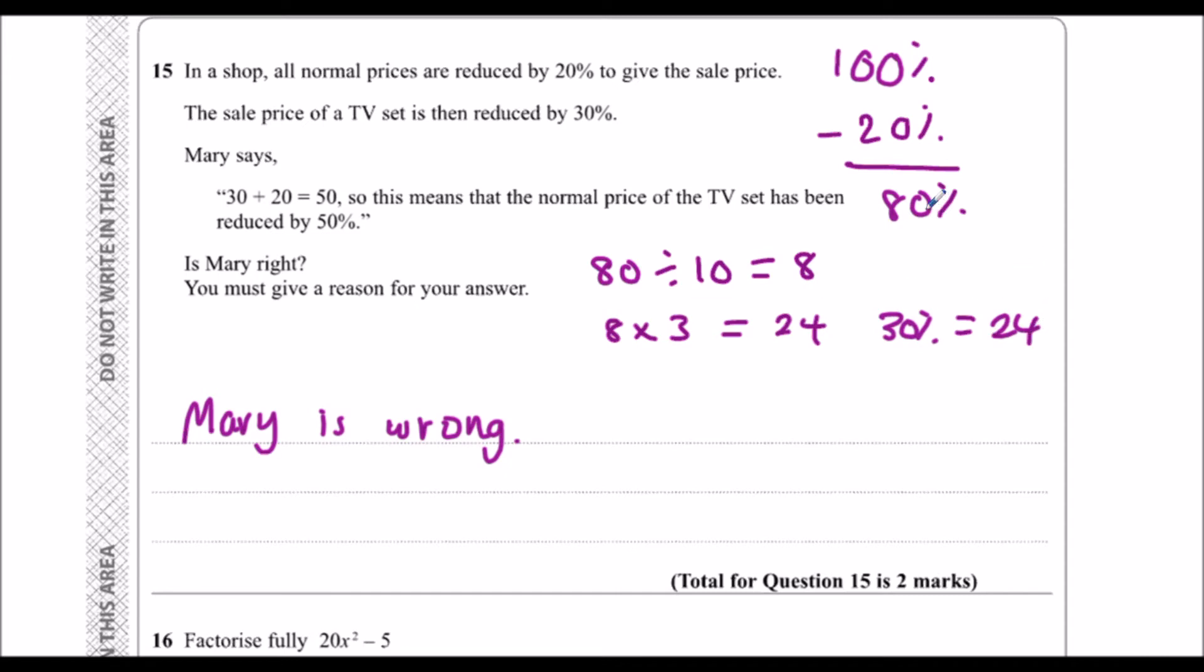If you took 24 off of 80, you'll get 56% left. So the price hasn't gone down by 50% because when you reduce the prices again, 100% has changed.